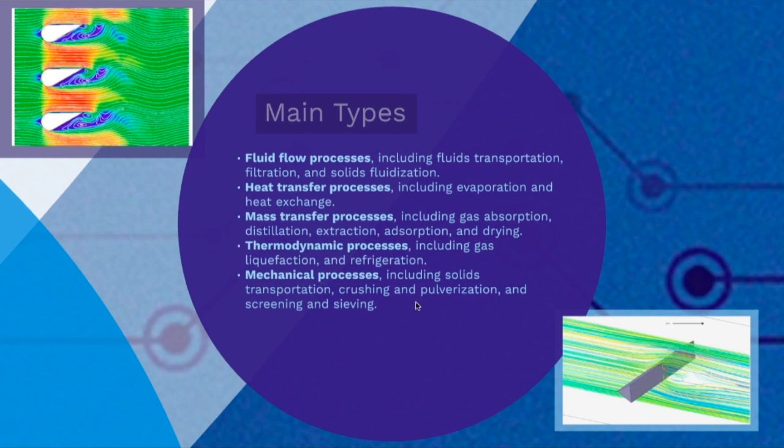Then we have the mechanical process which includes transportation, crushing, pulverization and sieving. This is most likely used in process engineering or mechanical engineering. Chemical engineers do it as well but because there are not that many chemicals involved, this is essentially solids manipulation. This is not that used in chemical engineering even though a chemical engineer can do it.